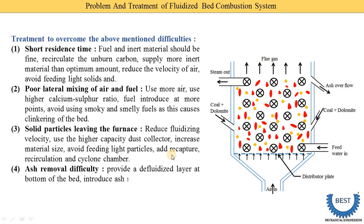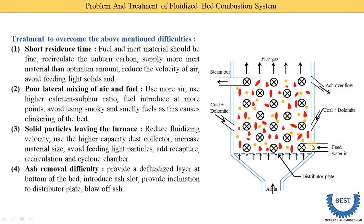The fourth problem is ash removal difficulty. To avoid this, we have several options: first, provide a defluidized layer at the bottom of the bed on the distributor plates, followed by the fluidized bed layer. Second, introduce ash slots on the bottom parts of the vessel. Third, provide inclination to the distributor plate — instead of a horizontal plate, use an inclined plate so ash removal is easier. Fourth, use a blow of ash — use a fan to remove ash from the distributor plates.